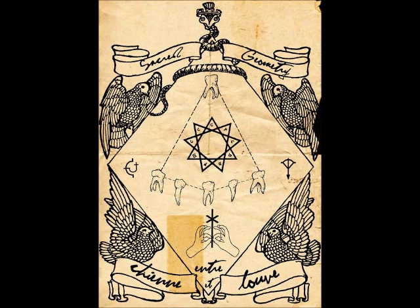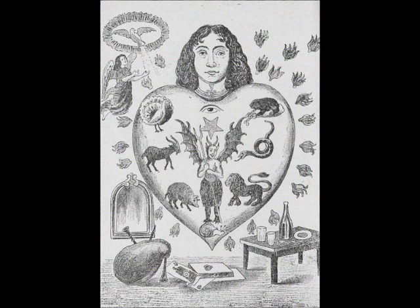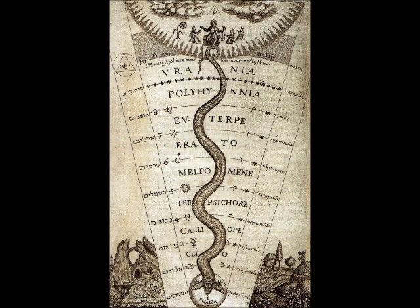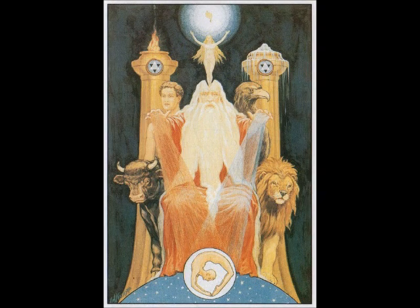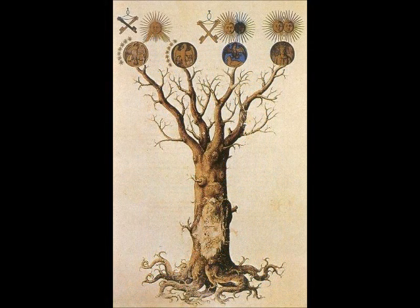Similarly, in the members of a temple there ought to be the greatest harmony in the symmetrical relations of the different parts to the general magnitude of the whole. Then again, in the human body the central point is naturally the navel. For if a man be placed flat on his back with his hands and feet extended and a pair of compasses centred at his navel, the fingers and toes of his two hands and feet will touch the circumference of a circle described therefrom. And just as the human body yields a circular outline, so too a square figure may be found from it — for if we measure the distance from the soles of the feet to the top of the head and apply that measure to the outstretched arms, the breadth will be found to be the same as the height, as in the case of plane surfaces which are perfectly square.